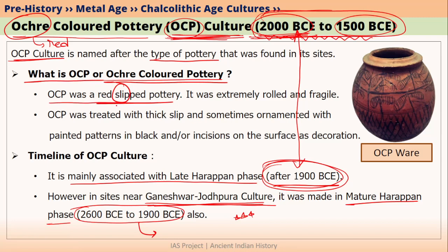Ochre Coloured Pottery had a red slip. Moreover, this pottery was also extremely rolled and fragile. You can see an example of Ochre Coloured Pottery in this picture. The shade of red that you can see in this pot is called Ochre, and therefore this pottery is called Ochre Coloured Pottery.